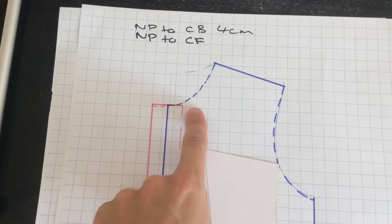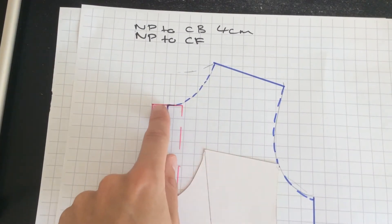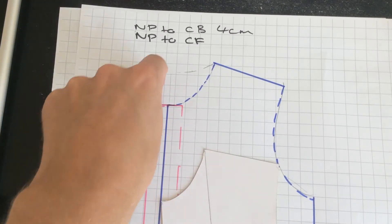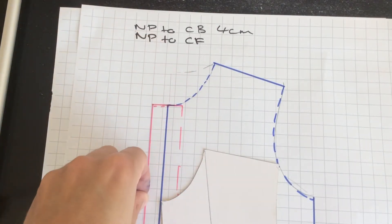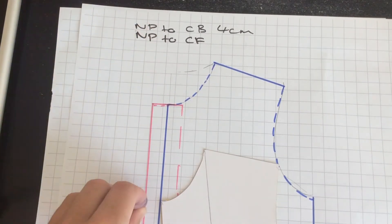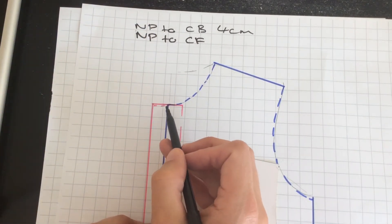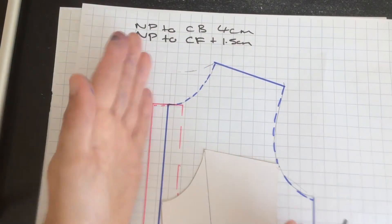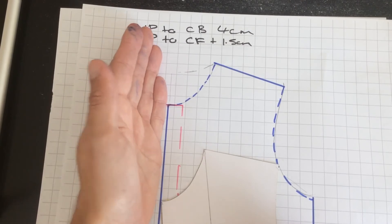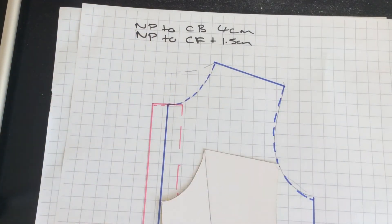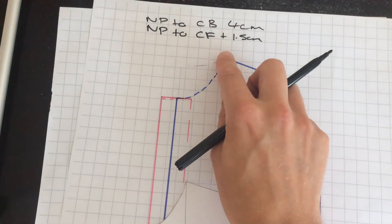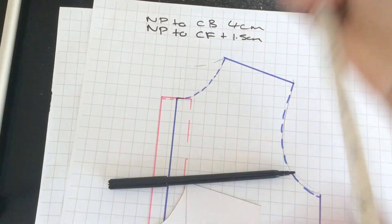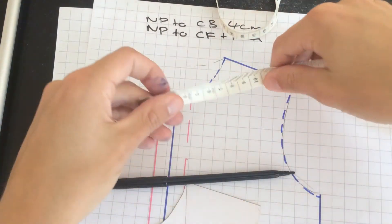So neck point to center front. On this here where I've drawn it out, I've added on the button wrap because for this style we're presuming that you have an entry point into the garment, so a center front opening, and so that is going to be an additional 1.5 on this one. You could do this exercise up to the original center front. It's just good to have a bit of extra length. So we need to measure that measurement which I believe is 8 on this scale for this exercise.